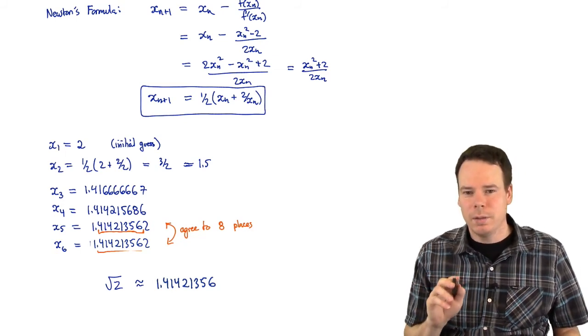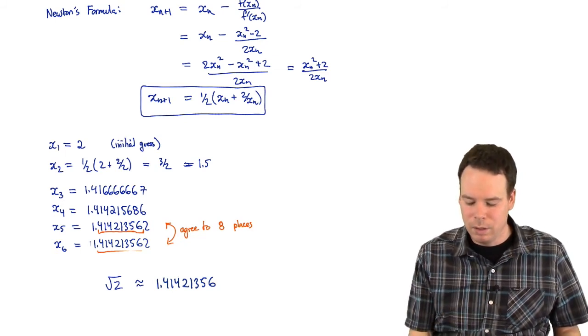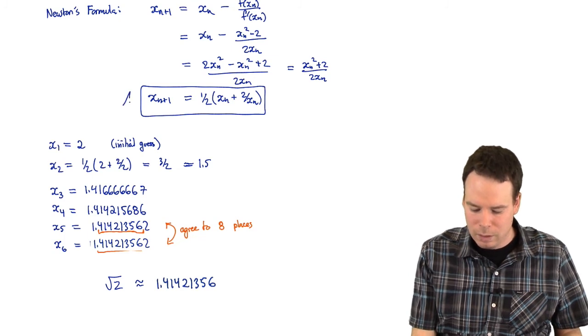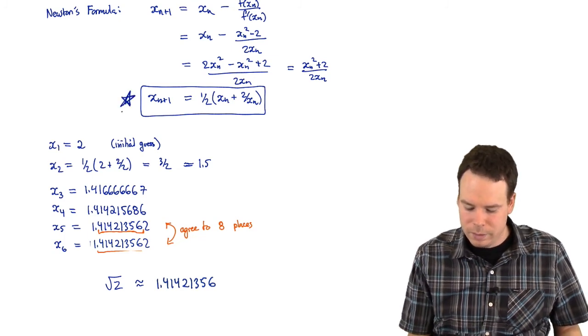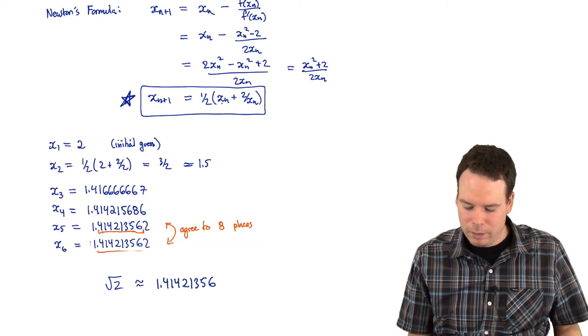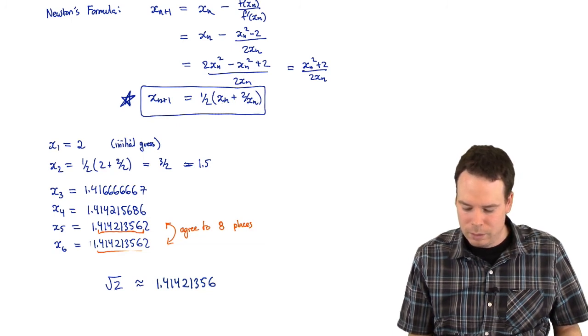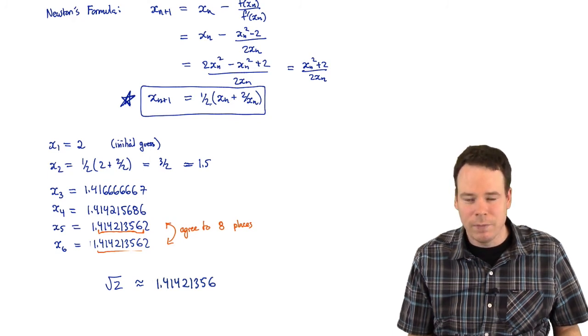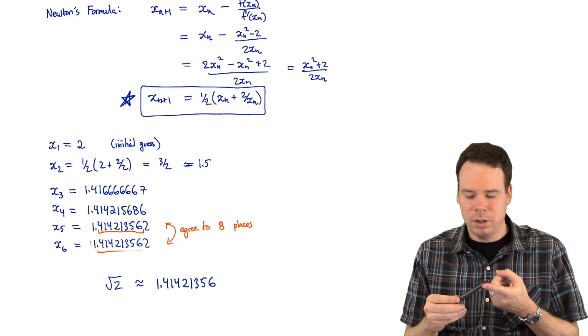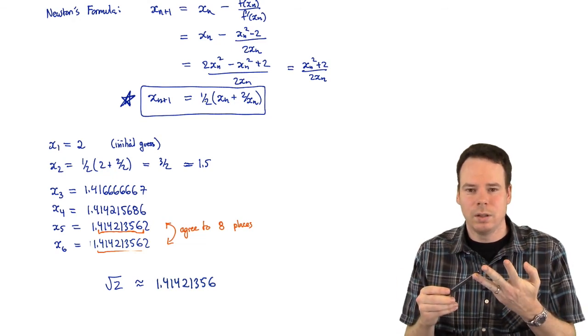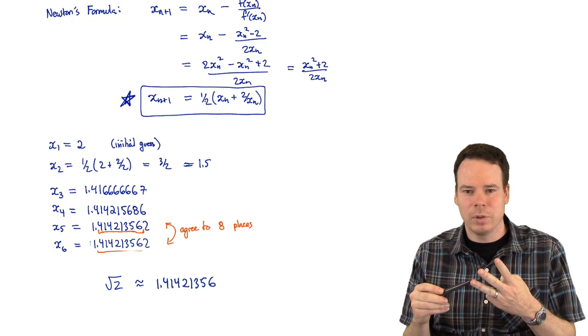Ah, but think about what operations we had the computer doing. We had it working with this iterative formula. What's the iterative formula doing? Well, it's taking your input, adding it to 2 over your input, and then multiplying it by half. So all it's doing here is addition, multiplication, and division. It's just doing those three arithmetic operations.